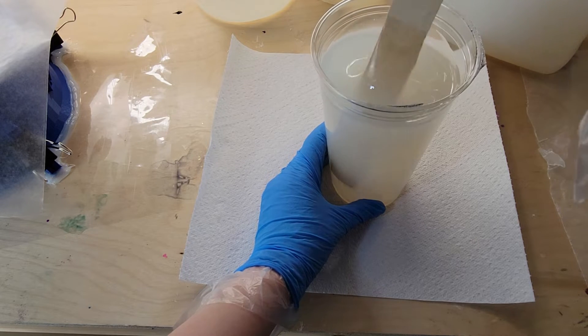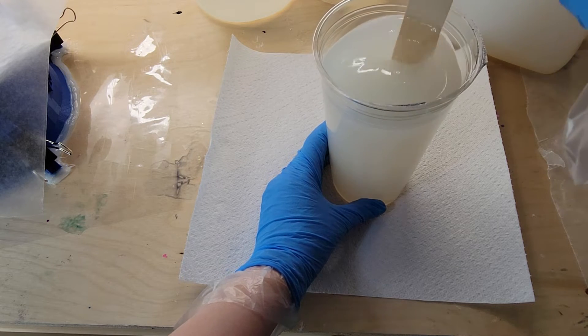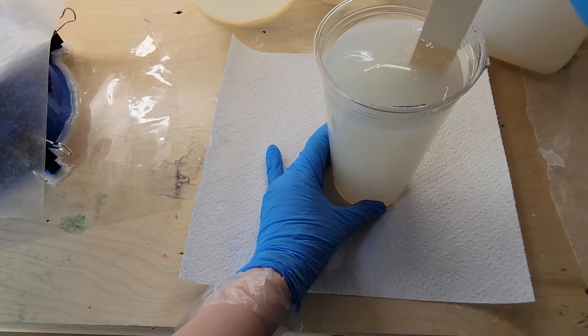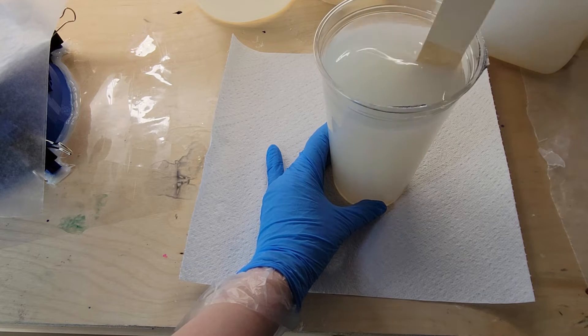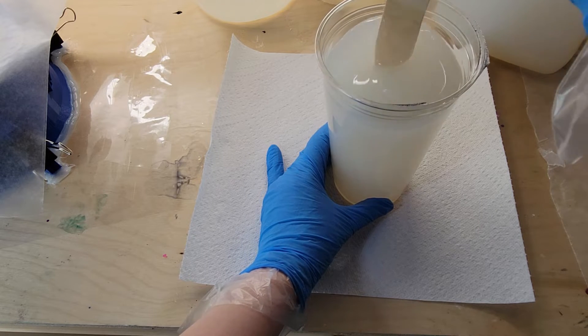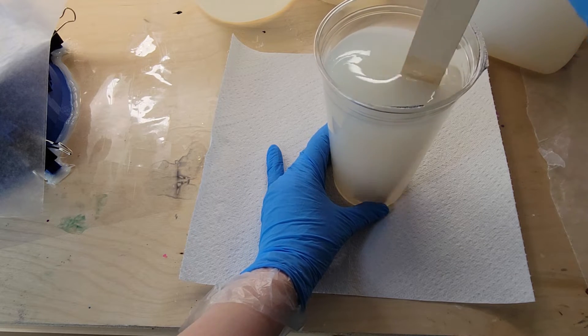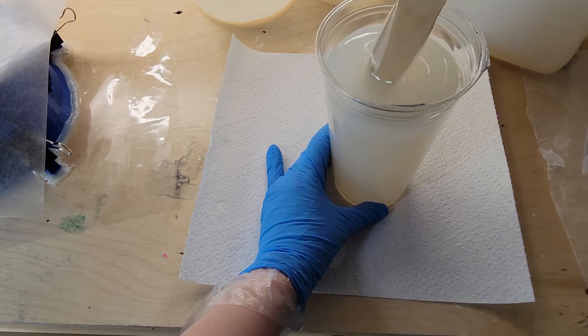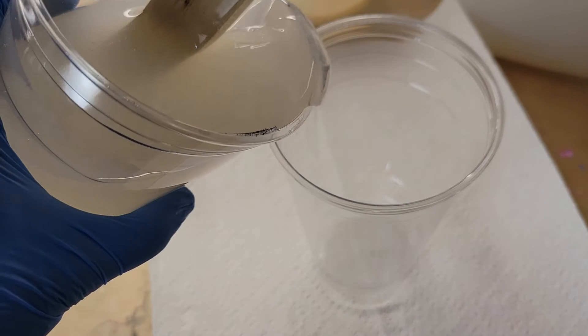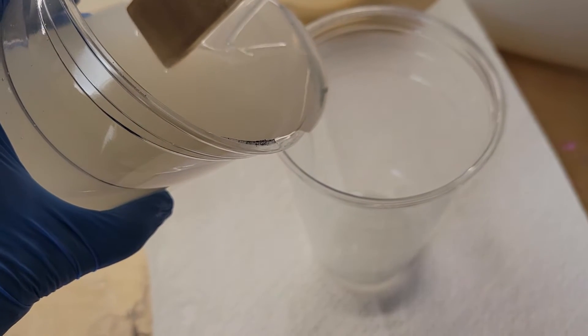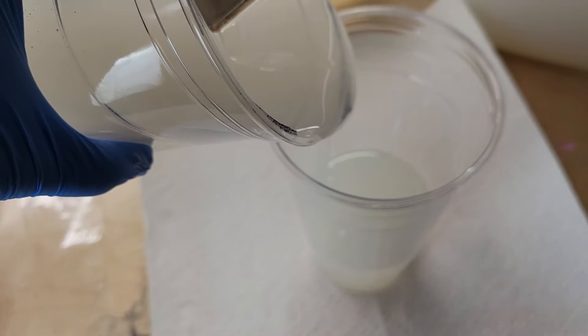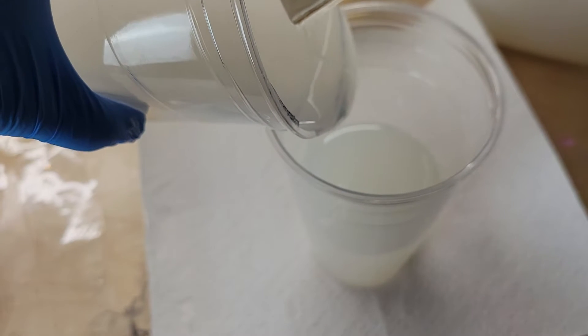What I like to do—this is just something I do personally to make sure my silicone is 100% mixed—is I'm going to take this mixture and pour it into another cup and mix it for another two minutes. That's just going to ensure that your silicone rubber is 100% mixed. You don't want to have any problems with your mold setting up from improperly mixed silicone rubber.